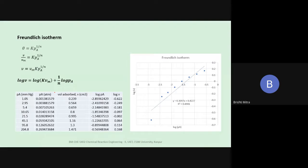For the Freundlich isotherm, theta equals K · P_A^(1/N). Since we have volume adsorbed rather than theta directly, we write theta as V/V_m, so V equals V_m · K · P_A^(1/N). Taking logarithms, log V equals log(K · V_m) plus (1/N) · log P_A. We convert P_A to atmosphere, compute log P_A and log V, and plot log V on the y-axis versus log P_A on the x-axis.